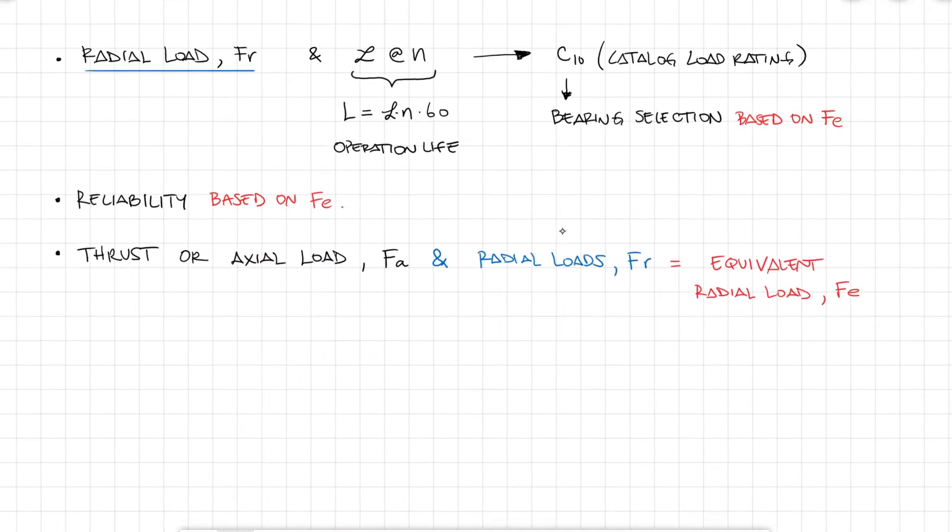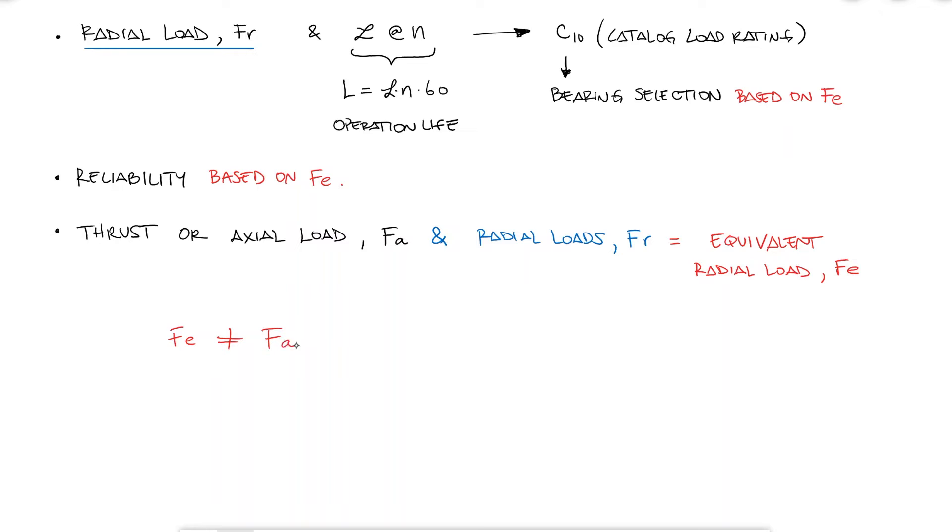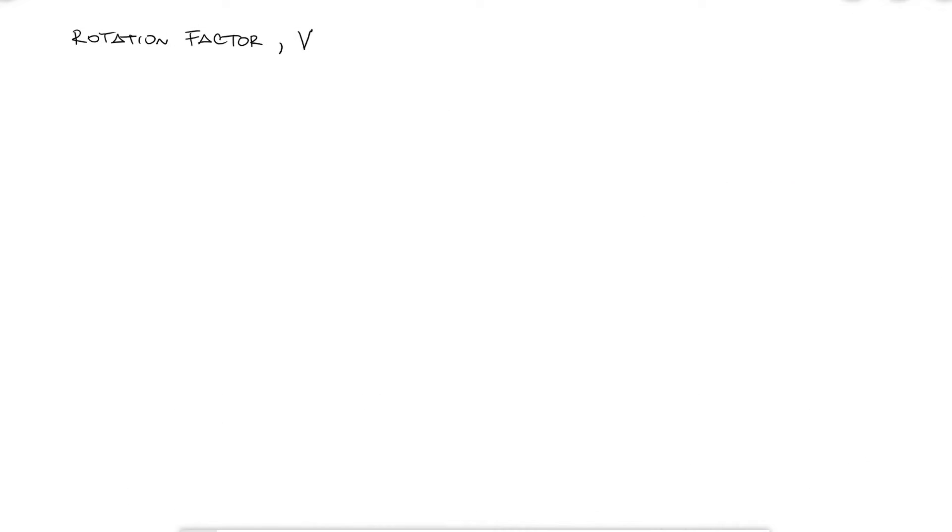This is not as simple as adding them together or finding a resultant vector. By defining a rotation factor capital V, we can write two dimensionless variables Fe over VFR and Fa over VFR. V equals 1 for when the inner ring is rotating, and equals 1.2 when the outer ring is rotating.